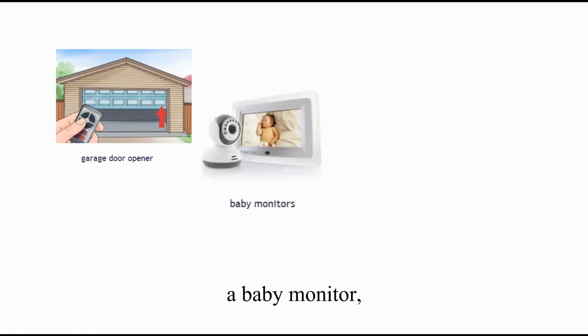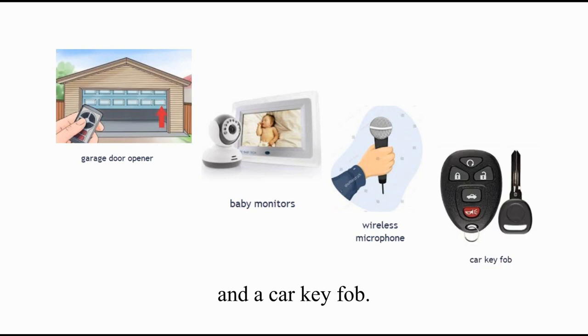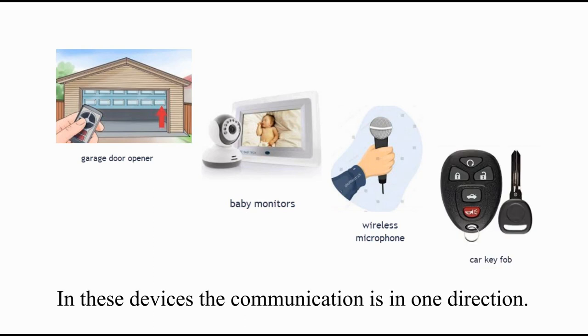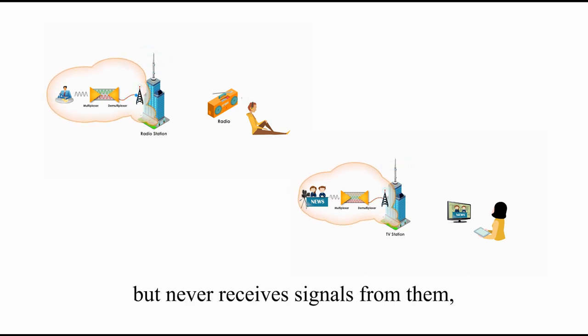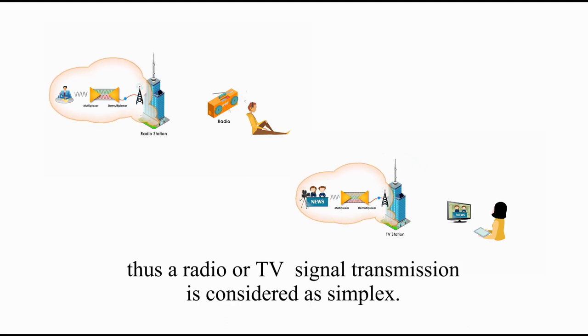A garage door opener, a baby monitor, a wireless microphone, and a car key fob. In these devices, the communication is one direction. A radio or TV station usually sends signals to the audience but never receives signals from them. Thus, a radio or TV signal transmission is considered as simplex.